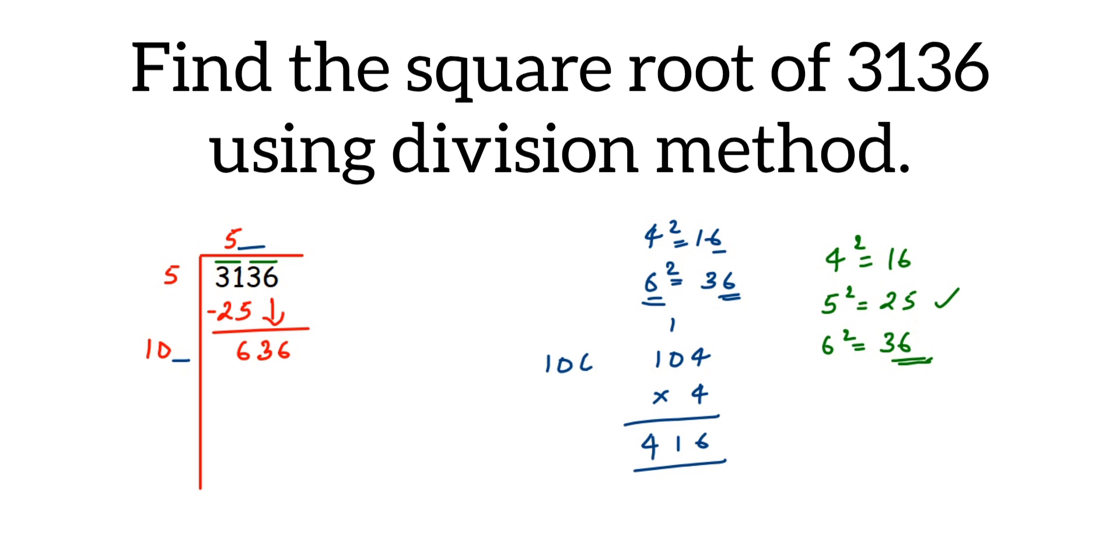So 106 times 6. 6 times 6 is 36. 6 times 0 is 0. We have 3 as a carry, so we will write that. And 6 times 1 is 6. So we get 636. This means we get 6 here in the divisor and 6 in the quotient. So 106 times 6 is 636.